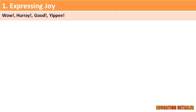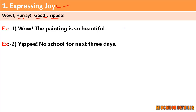First, when we express a feeling of joy or happiness, we use interjection words like wow, hooray, good, yippee. For example: 'Wow, the painting is so beautiful!' and 'Yippee, no school for the next three days!'